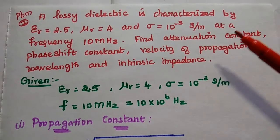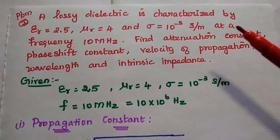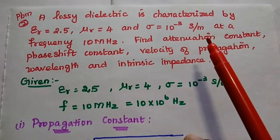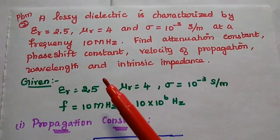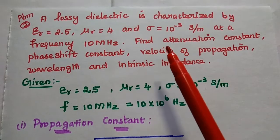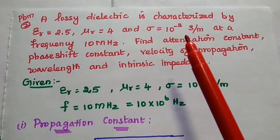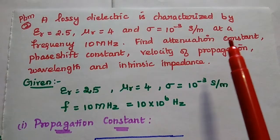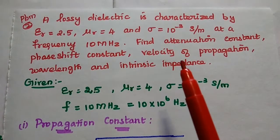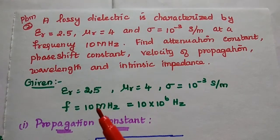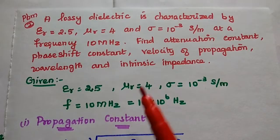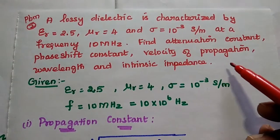Let's solve one important problem in this lossy dielectric. A lossy dielectric is characterized by epsilon_r equal to 2.5, mu_r equal to 4, and sigma equal to 10 to the power minus 3 Siemens per meter at a frequency of 10 MHz. Find the attenuation constant, phase shift constant, velocity of propagation, wavelength, and intrinsic impedance.